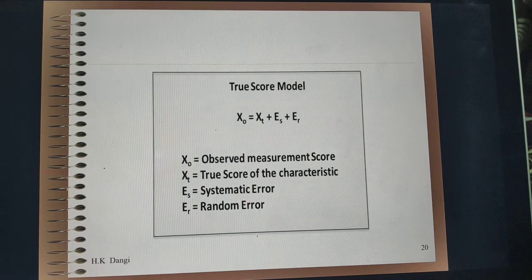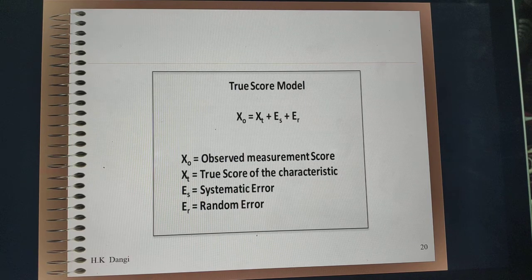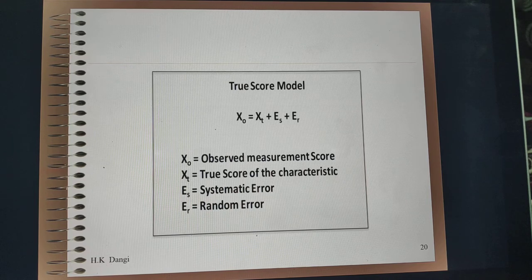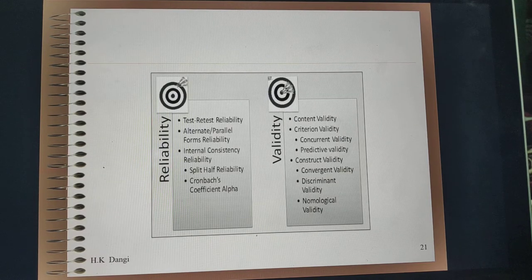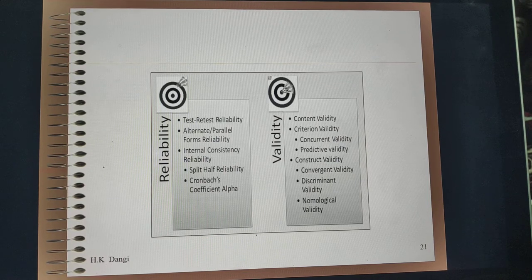Now talking about reliability and validity: the observed score consists of the true score plus systematic error and random error. Random error is something that gets rectified if you repeat your observation, but if it doesn't get rectified even after repeated observation then it is a systematic error. If you make your observation free from random error it is termed reliability — if you have to choose one word for reliability it would be consistency. If your observation is free from both random and systematic error then it is termed validity — the one word for validity would be accuracy.